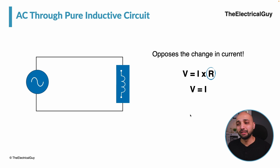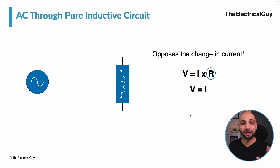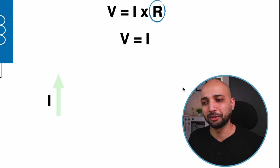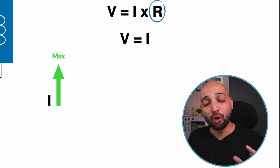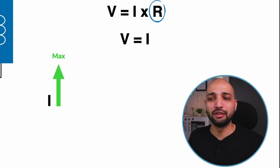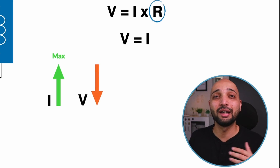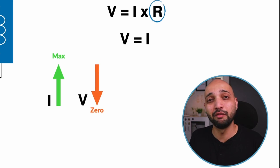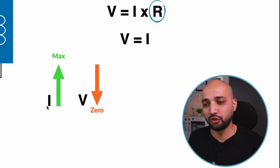As we have seen, the inductor opposes the change in current. So if you are passing a continuous current through it, it is okay. But if you are passing an alternating current, the inductor is not okay — it will start opposing that. Let's say current is going from zero to its maximum position. What the inductor does is try to maintain the current at a constant level, and to do that it drops the voltage to zero so that it can bring the current back to its previous position — that is, zero.